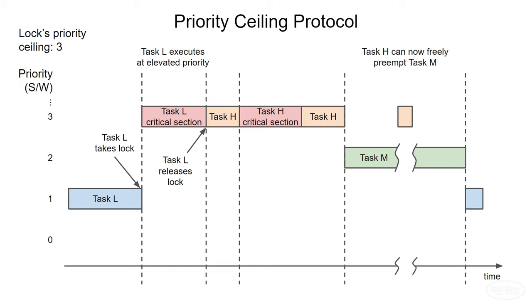It's possible to implement priority ceiling protocol in FreeRTOS, but it would require a lot of work and possibly modifying the queue source code. There's no reason to do that when we have the next solution already built into FreeRTOS.